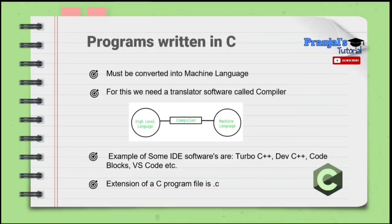To run a C program, first we need a text editor to write the program, and second, we need a compiler to convert it into machine language. The software that combines both a text editor and a compiler together is called an IDE — Integrated Development Environment. Using an IDE we can write the program and convert it to machine language directly and execute it.